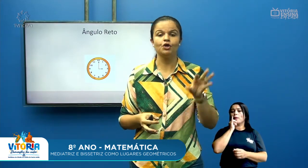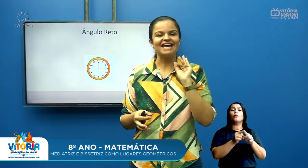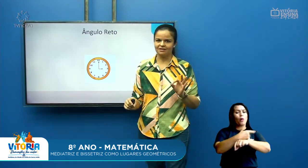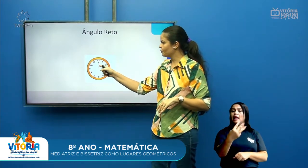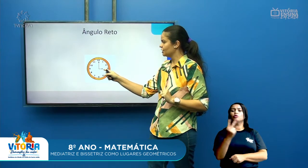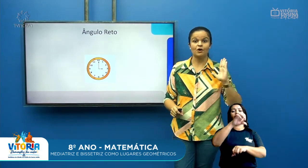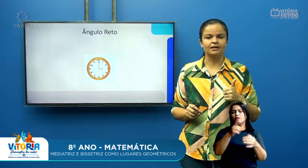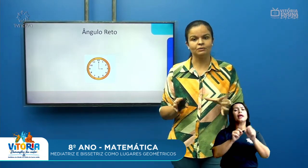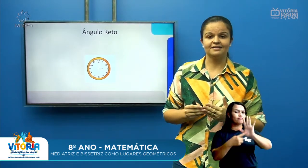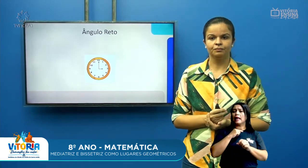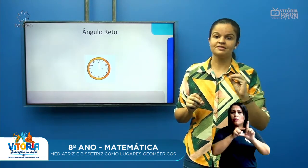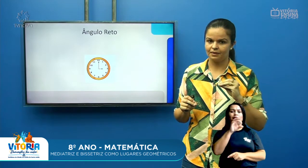Aqui eu trouxe um exemplo de um relógio e um ângulo reto. O ângulo reto tem exatamente 90 graus. Esse relógio está marcando exatamente 3 horas da tarde: os dois ponteiros estão medindo exatamente 90 graus — é o ângulo reto. Quando ele é reto, aparece um quadradinho com um pontinho, onde você já sabe que ali tem um ângulo de 90 graus.